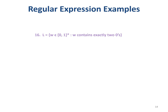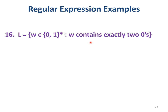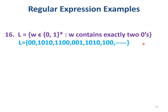For the language over Σ = {0, 1} where strings contain exactly two 0's: the two 0's are not necessarily consecutive, and there is no restriction on the number of 1's. Before the first 0 I may have any number of 1's, between the two 0's any number of 1's, and after the second 0 any number of 1's. So the regular expression is 1*·0·1*·0·1*.